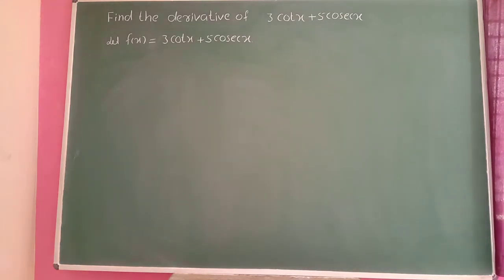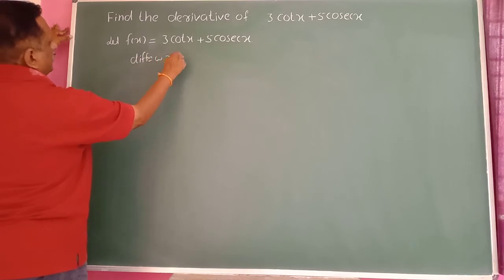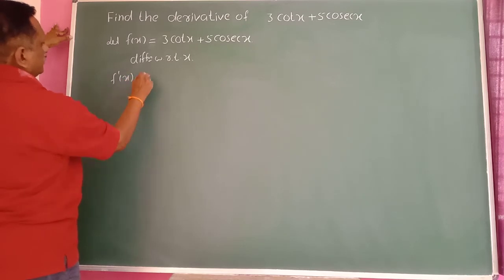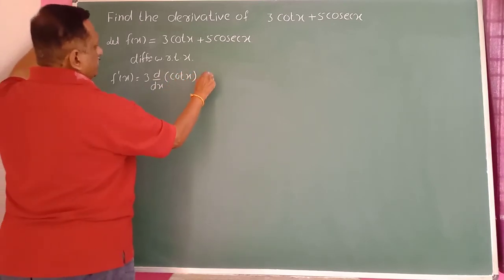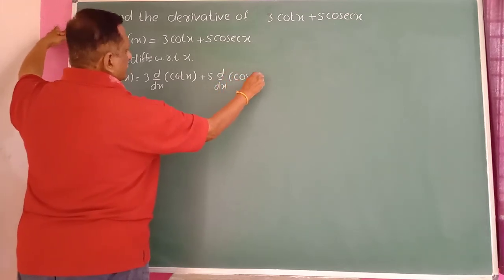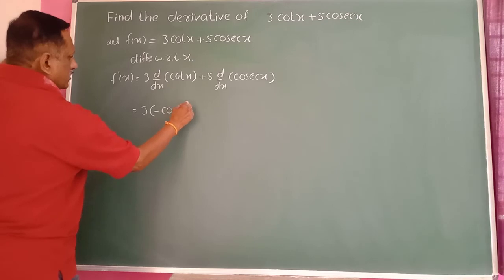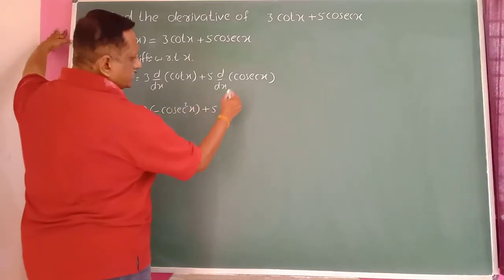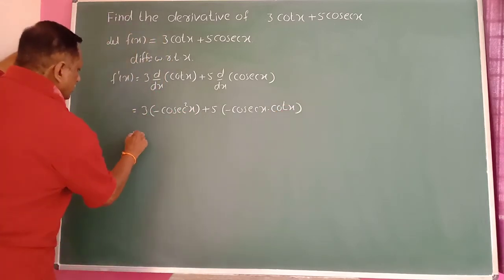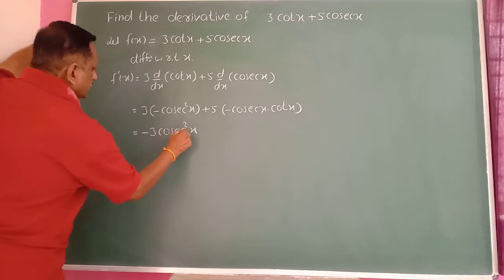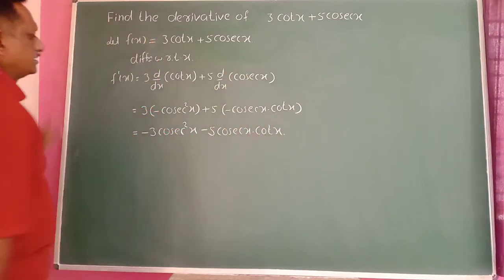Find the derivative of 3 cot(x) plus 5 cos(x). Differentiating with respect to x, f'(x) equals 3 into differentiation of cot(x) plus 5 into differentiation of cos(x). Differentiation of cos(x) is minus sin(x). This gives the final answer.